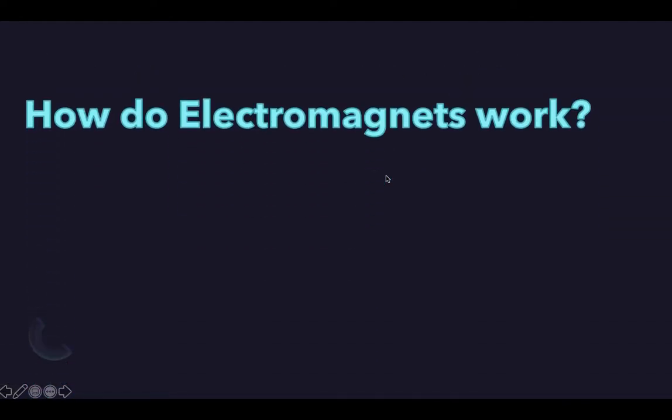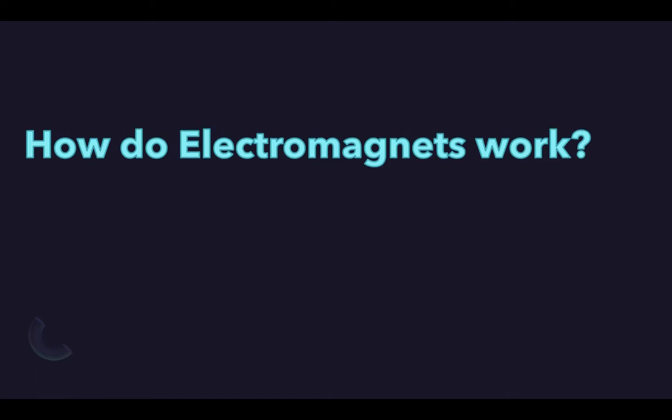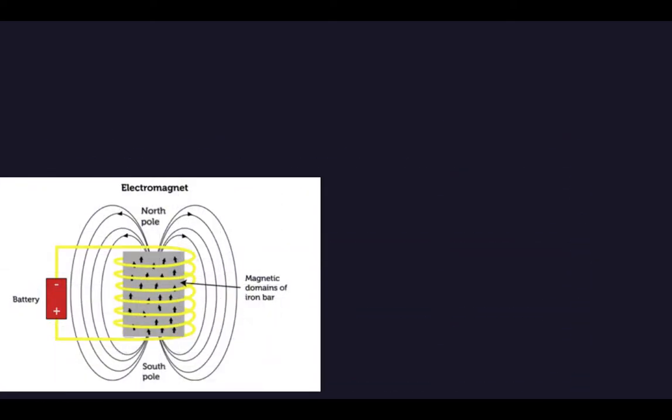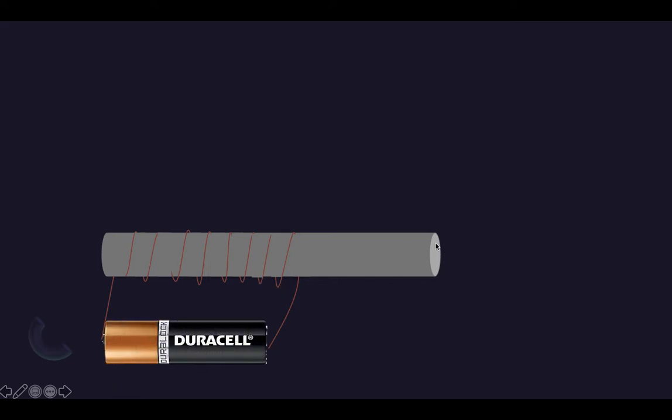How do electromagnets work? Let me just give you the animation. I have a copper wire, I coil it around the steel rod, and then I put a battery. Let's just look closer inside. Iron is a ferromagnetic substance.